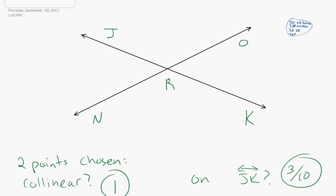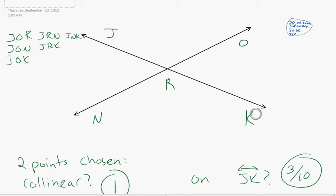Let's see. J-O-R, J-O-N, J-O-K. That's all the ones with J-O. Now all the ones with J-R. J-R-N, J-R-K. That's all the ones with J-R. Then J-N-K. And then I can't J-K, there's nothing else to go. So those are all the ones with J.